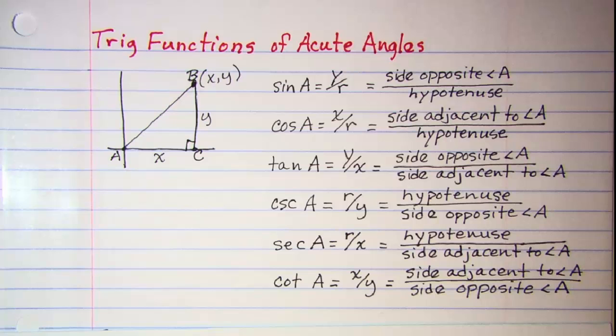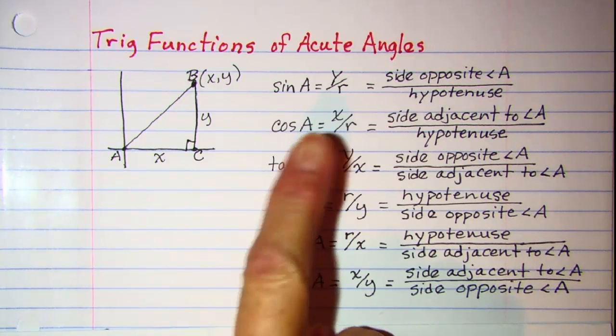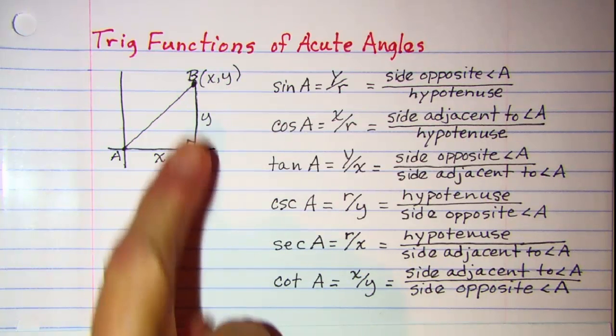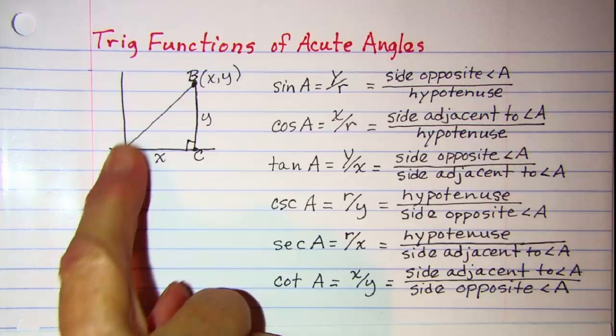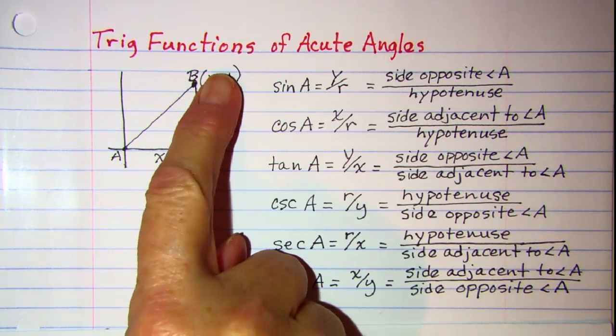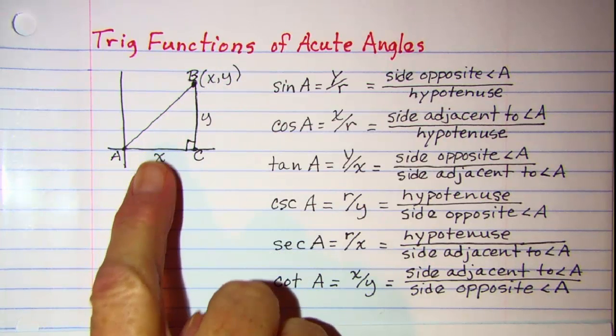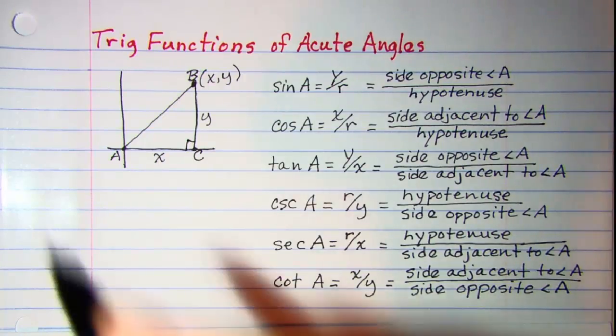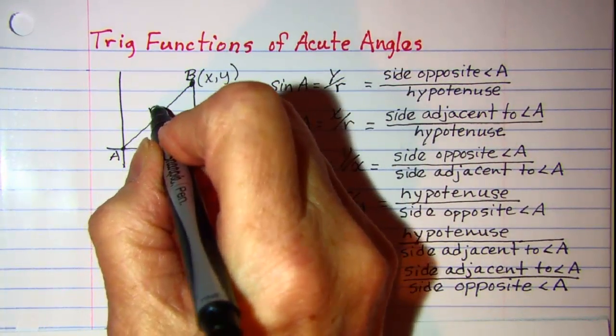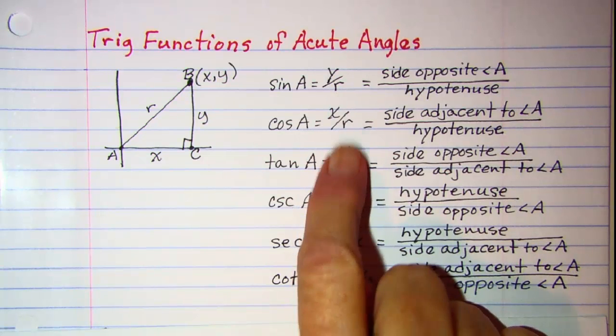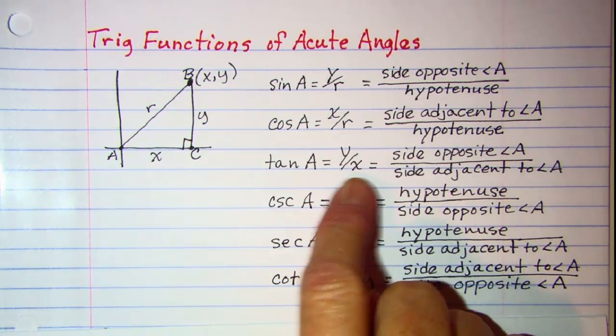Now you will notice that there are two ways to look at these trig functions. We can look at them with the coordinates of the point at the end of our vector right here on segment AB. The point is XY and the R is defined as the length of the hypotenuse. So we can see that sine is Y over R, cosine X over R, tangent Y over X and so forth.